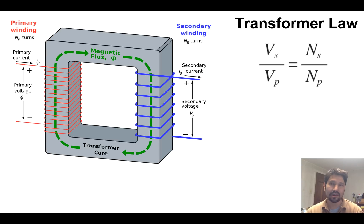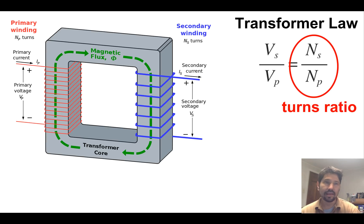Our law will be the voltage at the secondary here coming off in the blue over the voltage of the primary will be in direct proportion to the number of secondary coils relative to primary coils. The number of secondary turns divided by the number of primary turns of that coil is what we call our turns ratio.